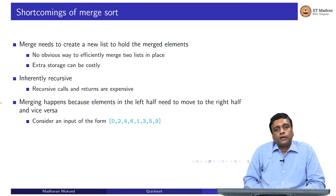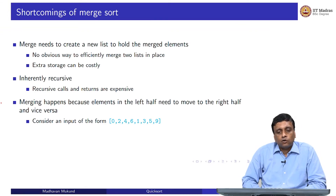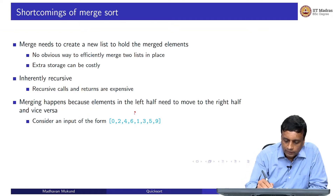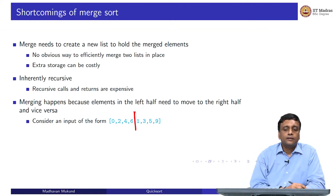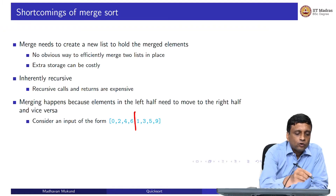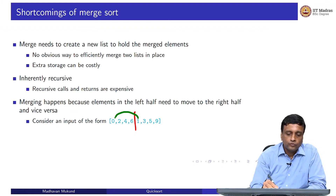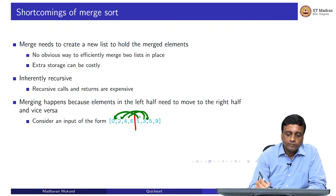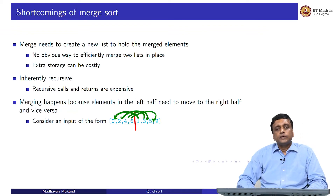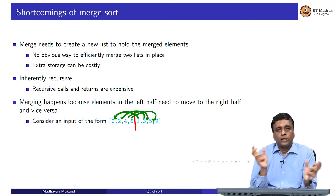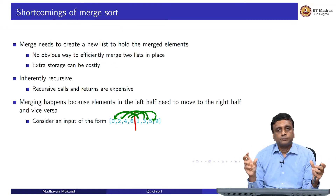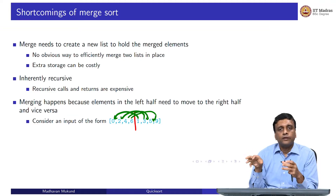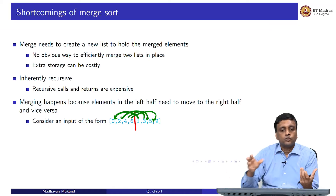Why does merging require extra space? If you think about an example where the left and right halves are already sorted, I cannot leave them as they are because I have to move things — I have to move the 1 and the 3 here, and in principle move the 4 and the 5 there. Unless I do this shifting of things across the two halves, I will not be able to assemble the full sorted list.